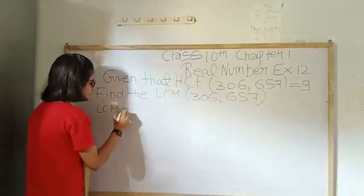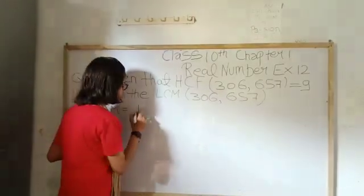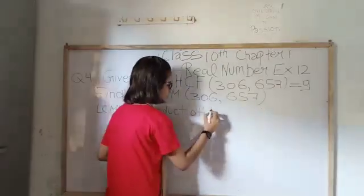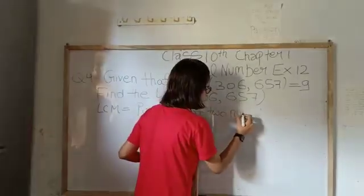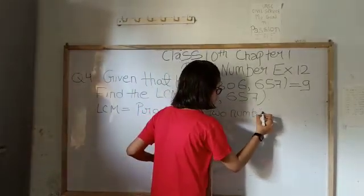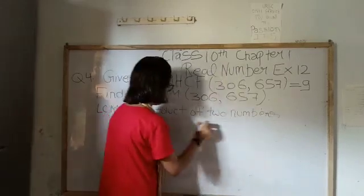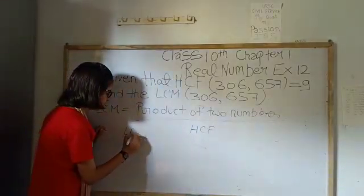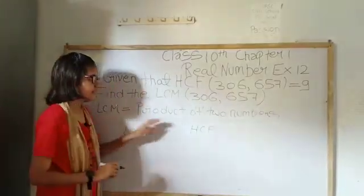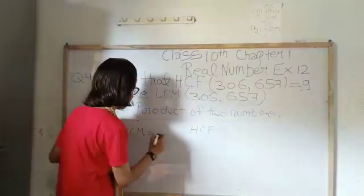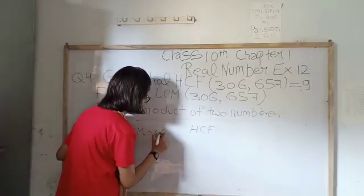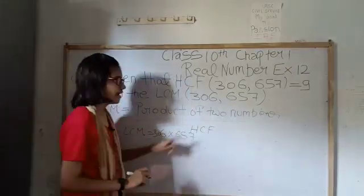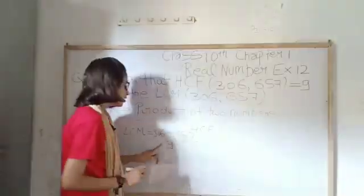LCM equals to product of two numbers by HCF. We are finding LCM, so LCM equals to 306 into 657 by what is our HCF, that is 9.